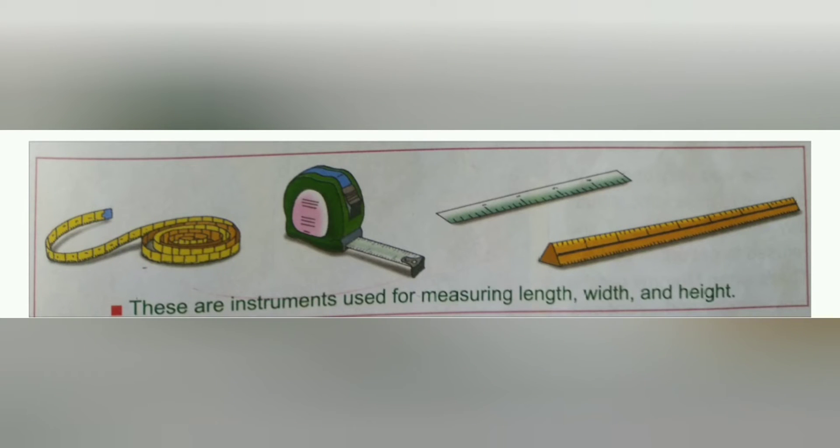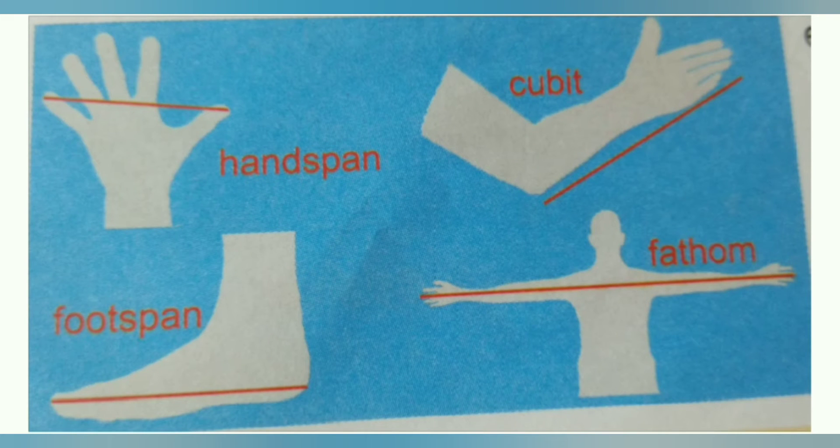Children, these are the instruments used for measuring length, width and height. In early times, there were no tape and scale. They used to measure the length using their body parts like hand and leg, but these are not standard units because width, height and length will be different in different people. These units are cubit, handspan, footspan and fathom.